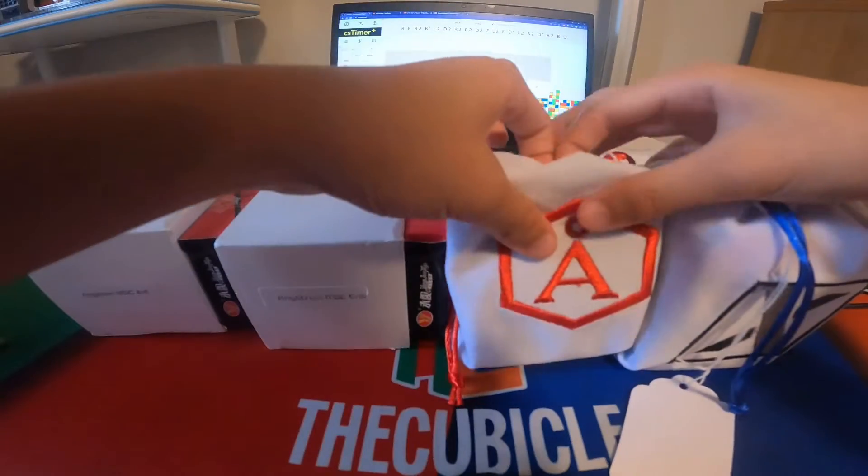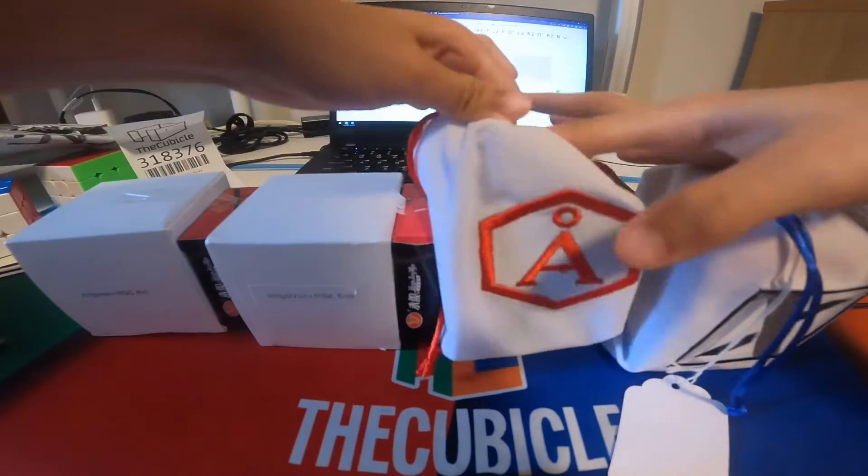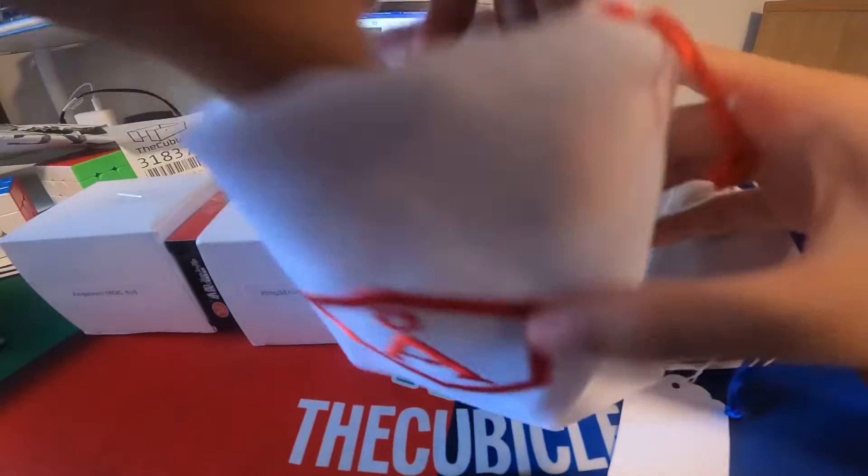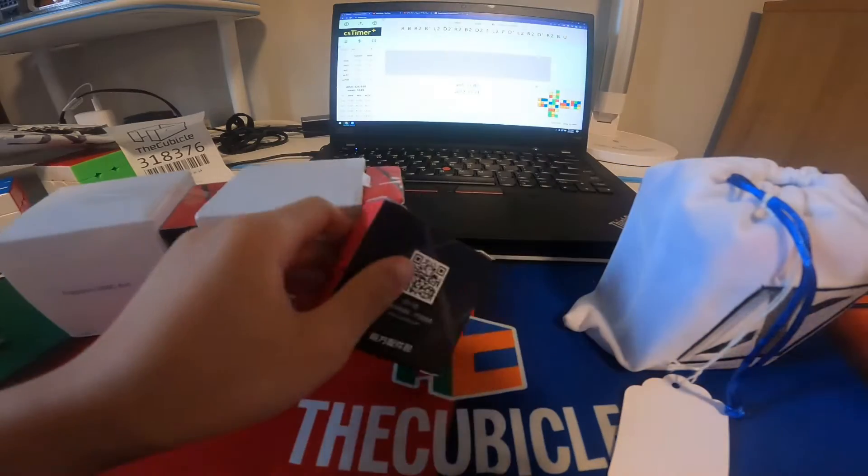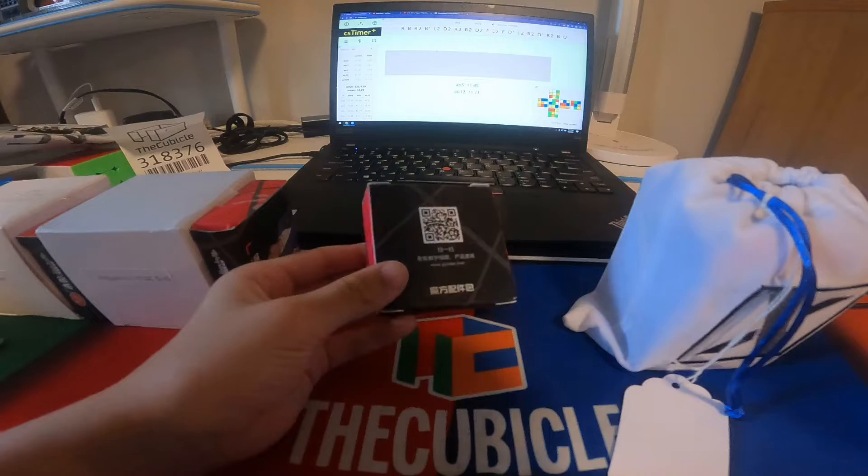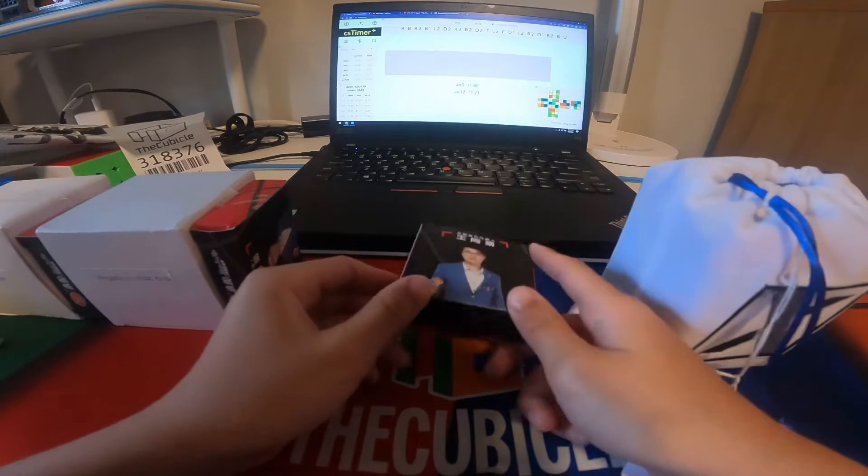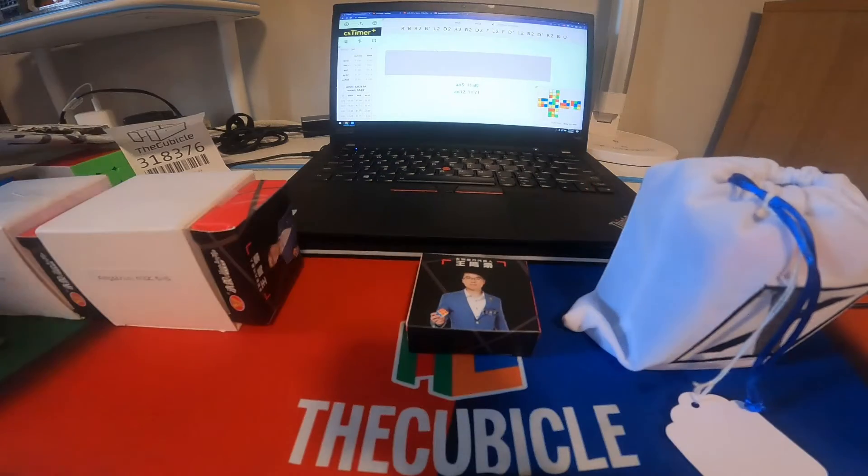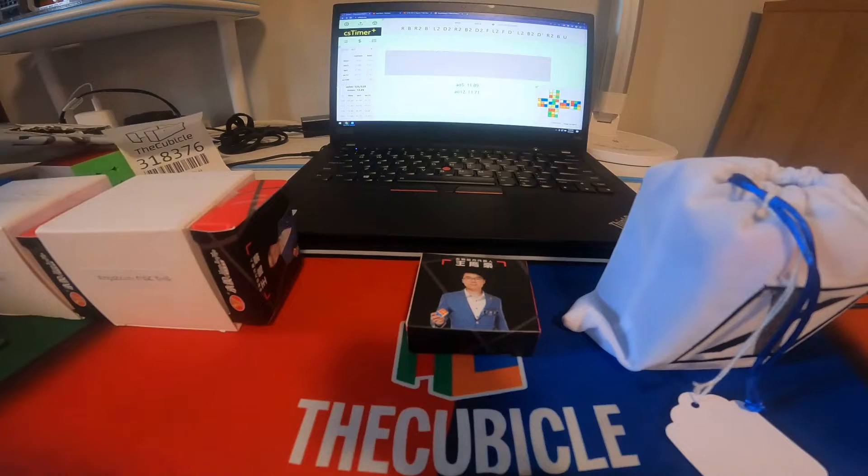Anyways, let's start with the smallest, which is the 2x2. So YJ MGC 2x2 Angstrom. My current, I bought this for a competition.